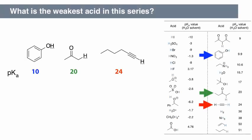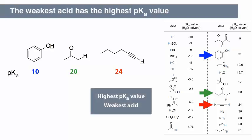What is the weakest acid in this series? The weakest acid has the highest pKa value. In this case, the alkyne is the weakest acid. Otherwise said, it's the least acidic.